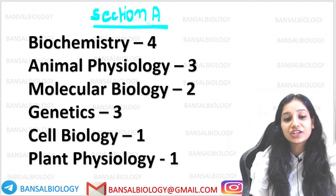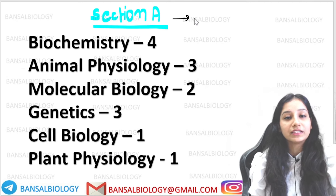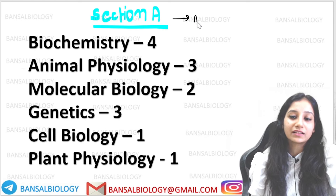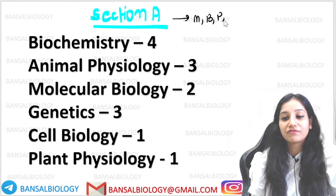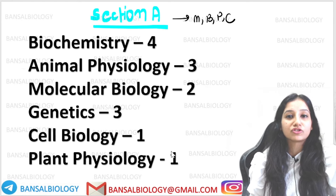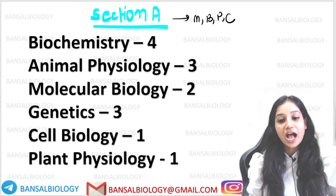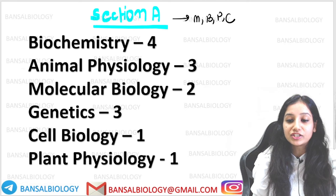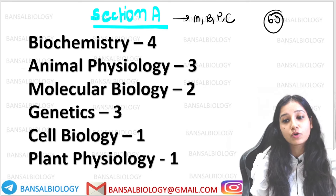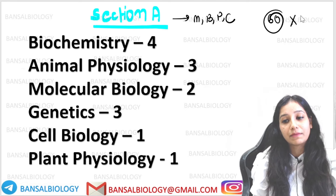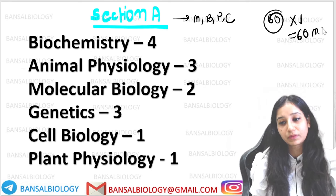If we talk about Section A, it is a section where there are 4 subjects: Maths, Biology, Physics, and Chemistry. There are 60 questions in total, all worth 1 mark each, so Section A carries 60 marks.